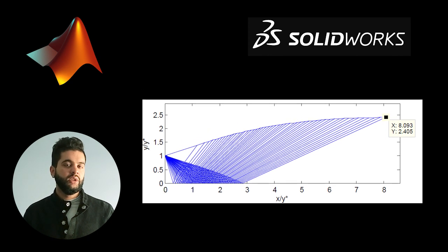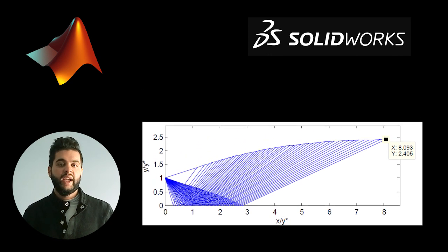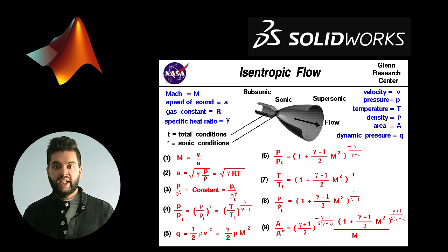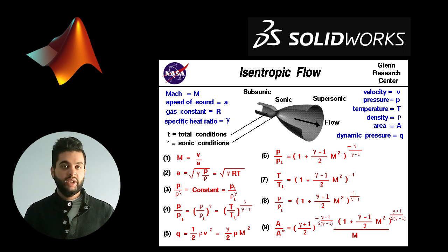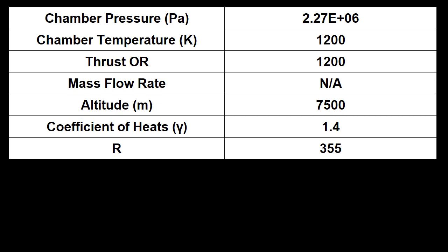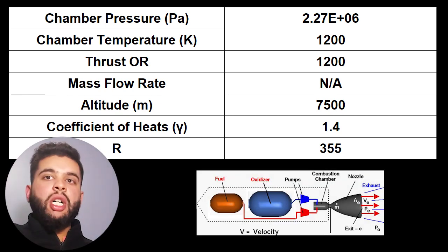This specific video will look at using the method of characteristics, which is a very popular tool used in the aerospace industry to design rocket engines. You can actually use this method to design a nozzle to your specific design conditions. I'll be showing you guys step by step how I'm doing this — and with that being said, let's get started. Here we have a design problem with the parameters: chamber pressure, temperature, force, mass flow rate, altitude, coefficient of heats, and R.